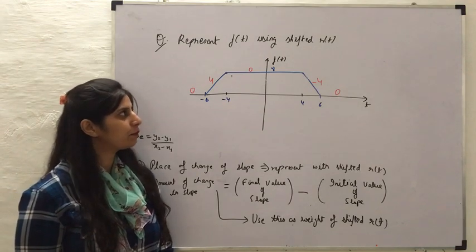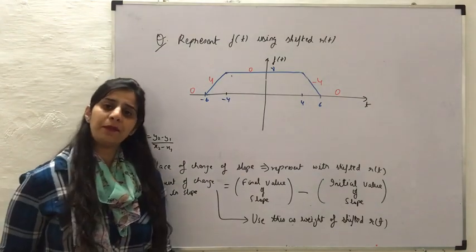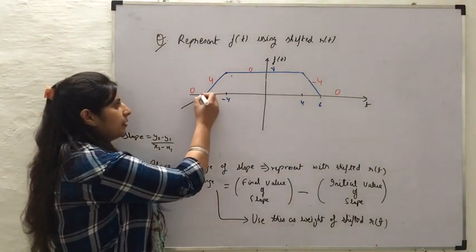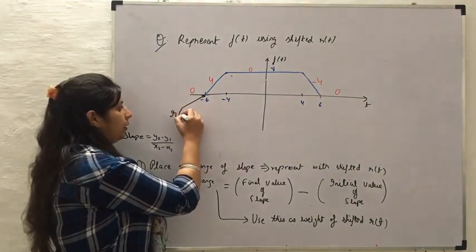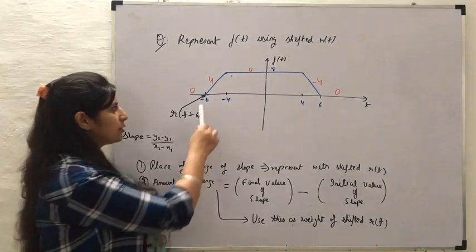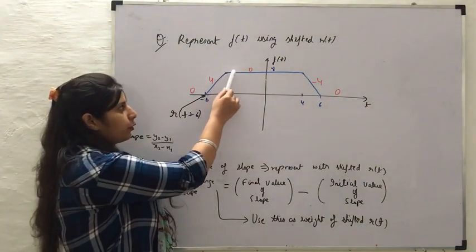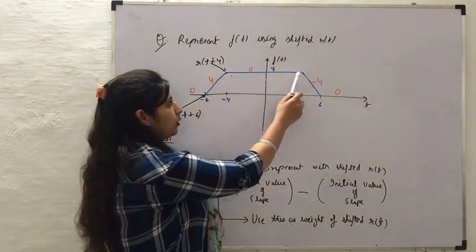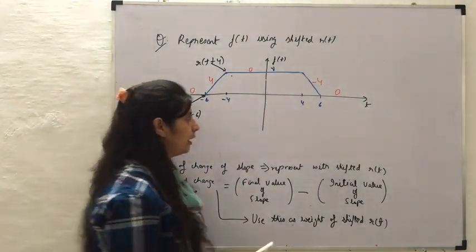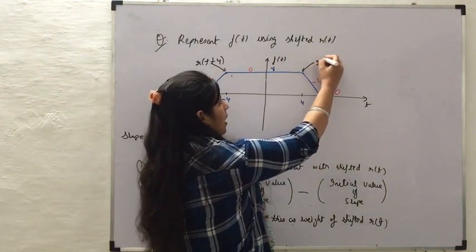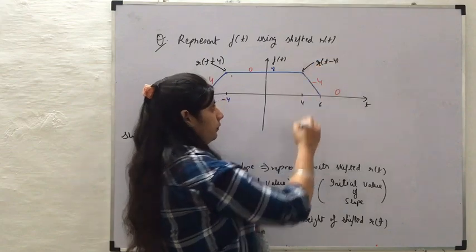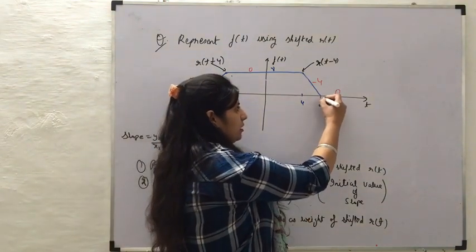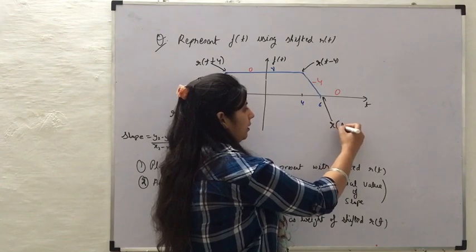Now let us see how F of T can be represented as shifted ramp signals by finding the places where the slope is changing. The first change occurs at T equals minus 6, written as R(T + 6). The next change, going from slope 4 to 0, is written as R(T + 4). Then at T equals 4 the slope changes again, written as R(T − 4). It continues with slope minus 4 until T equals 6, where the slope changes again, written as R(T − 6).